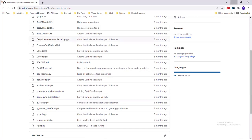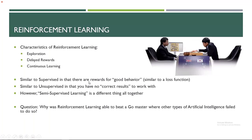Let me get into reinforcement learning. The things that really characterize it are exploration, delayed rewards, and continuous learning. It's somewhat similar to supervised learning in that there are rewards for good behavior, similar to a loss function. But it's also similar to unsupervised learning in that you have no correct result to work with — it's learning on its own from a reward signal instead. However, it's not semi-supervised learning; that's a different thing altogether. Reinforcement learning has similar characteristics to both but is really its own thing.